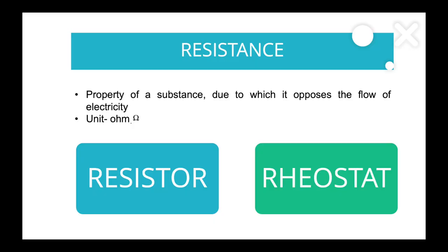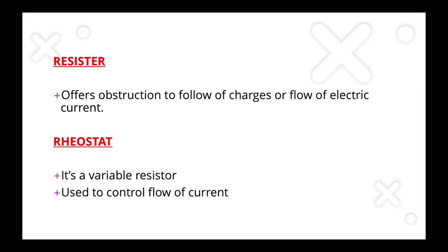A rheostat is a variable resistance device — it offers variable resistance and is used to control the flow of current in a device. The difference between a resistor and a rheostat is simple: a resistor just obstructs the flow of charges at a fixed value, while a rheostat varies the resistance offered. Both are used in different devices depending on the need.